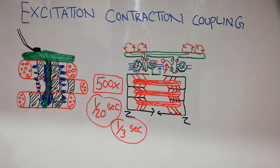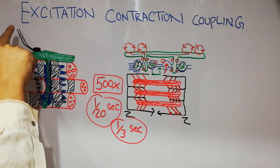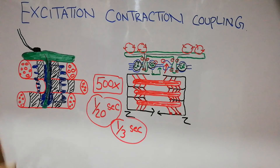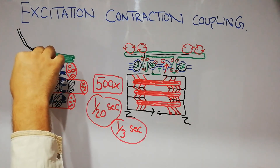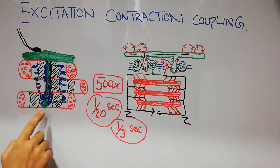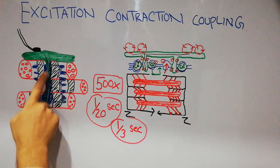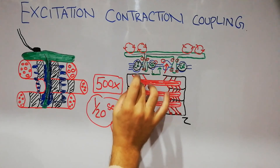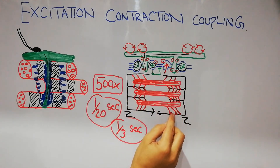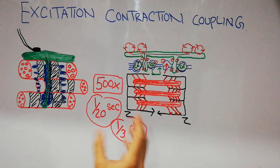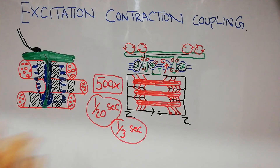In summary, excitation-contraction coupling consists of excitation and contraction. Excitation is carried by nerve fibers, and the stimulus is taken deep inside with the help of T-tubules. The T-tubule activates the sarcoplasmic reticulum, which secretes calcium. Calcium causes contraction of the thick and thin filaments — myosin and actin — and is then taken up again. The whole process occurs in up to 1/20th of a second. That is all about excitation-contraction coupling.